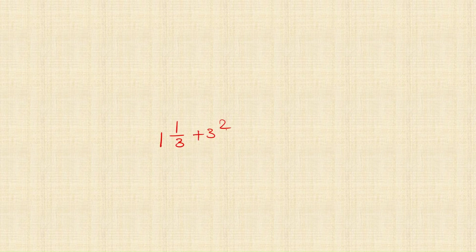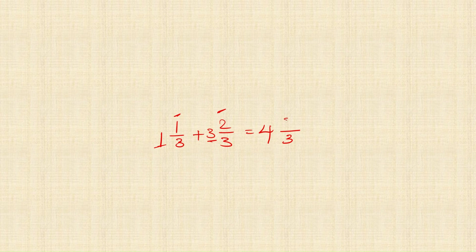Consider adding two mixed fractions: 1 and 1 upon 3 plus 3 and 2 upon 3. First add the whole parts: 1 plus 3 is 4. Then add the proper fractions: 1 upon 3 plus 2 upon 3. Denominators are the same, so write 3 in the denominator: 1 plus 2 is 3 upon 3, which equals 1. So 4 plus 1 gives a final answer of 5.